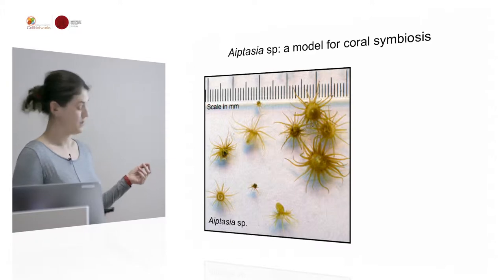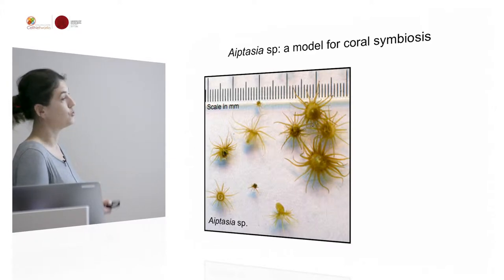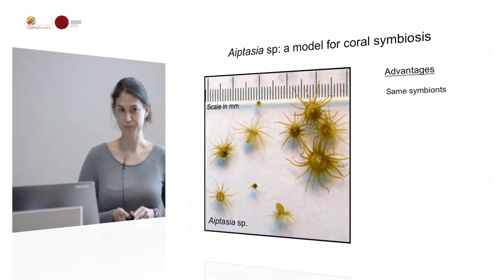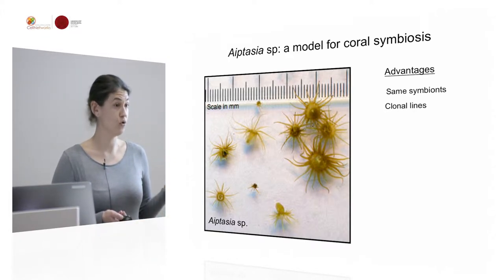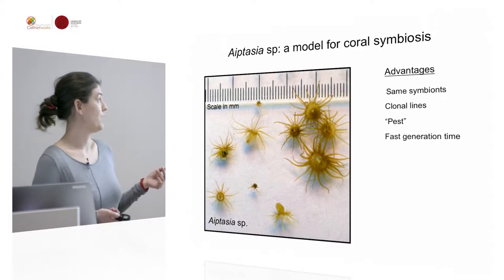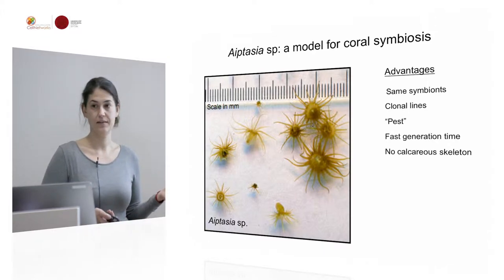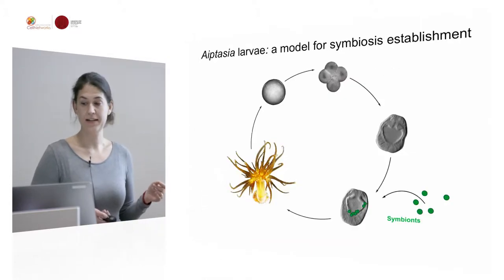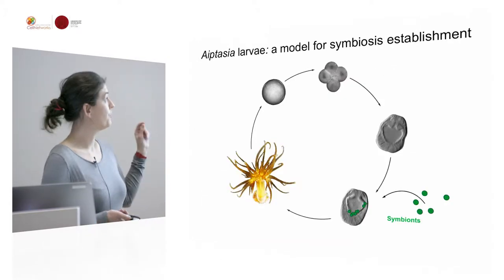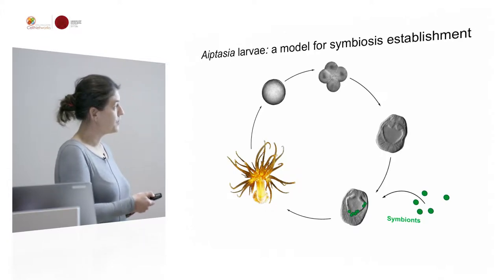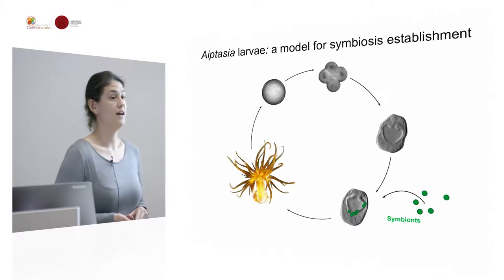What we are doing in the lab is use a model system — Aiptasia. It's a small tropical marine sea anemone which lives with the same types of symbionts as corals do. Their clonal lines grow like a pest and they have very fast generation times. Luckily, they also lack the calcular skeleton. Another very important aspect is that Aiptasia also establishes symbiosis during larval stages.